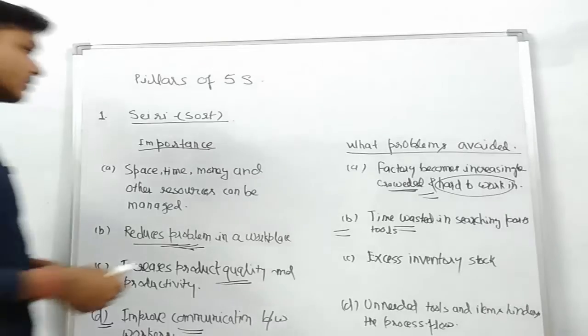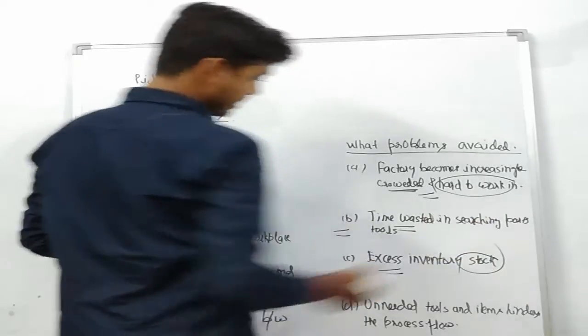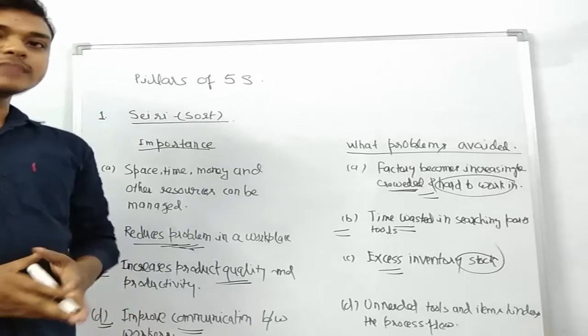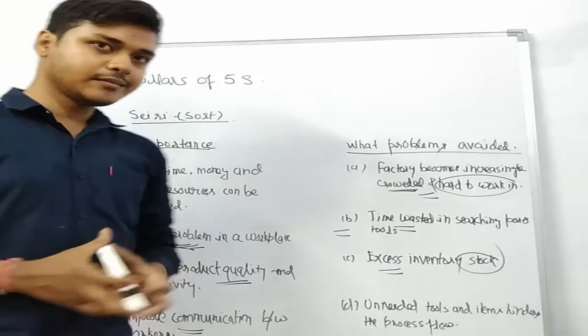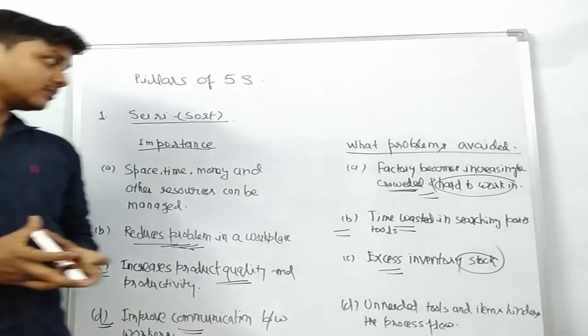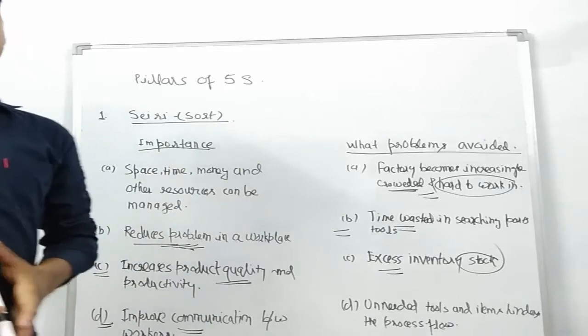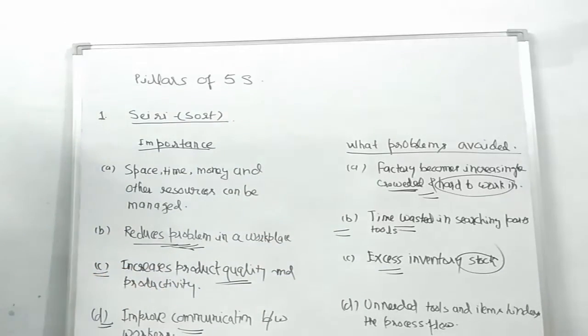Another is the excess inventory stock. We can eliminate the excess inventory stock which can build up in a factory or organization by managing things, by managing the inventory parts and tools in time and between production resources according to the demand of the production line. We can manage inventory stock by implementing the first pillar of the 5S.